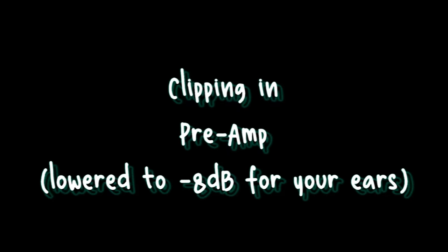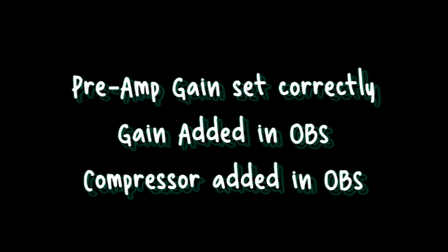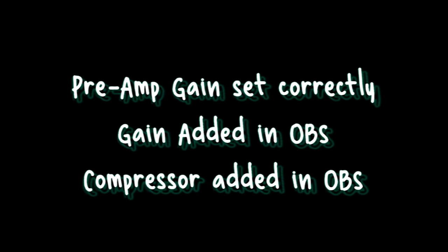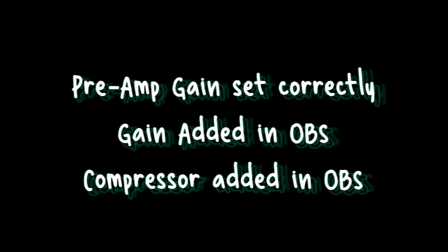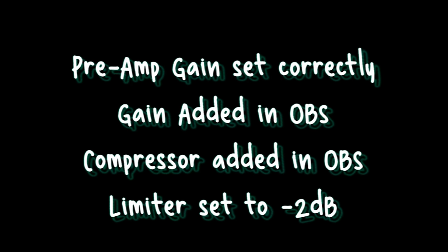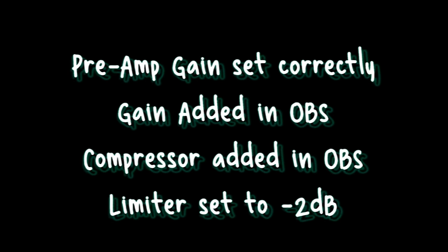In this sample, I have the gain set too high and I'm clipping in my preamps. Now with the reduced preamp gain, gained back up in OBS, and a compressor set to minus 16 dB, plus the compressor and limiter set up, it doesn't matter how loud I yell — we're not getting past minus 2 dB.